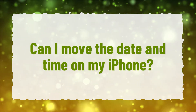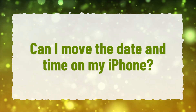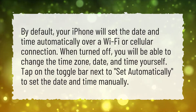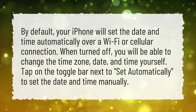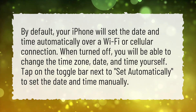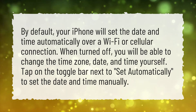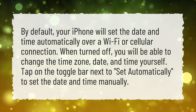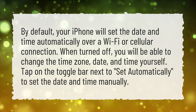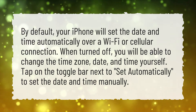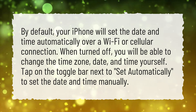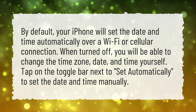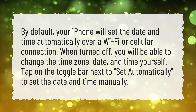Can I move the date and time on my iPhone? By default, your iPhone will set the date and time automatically over a Wi-Fi or cellular connection. When turned off, you will be able to change the time zone, date, and time yourself. Tap on the toggle bar next to 'Set Automatically' to set the date and time manually.